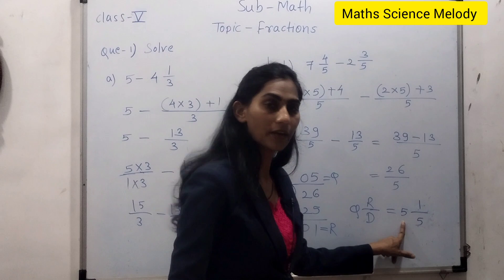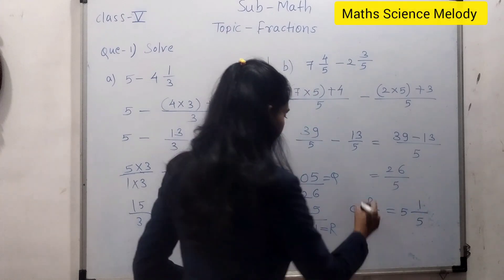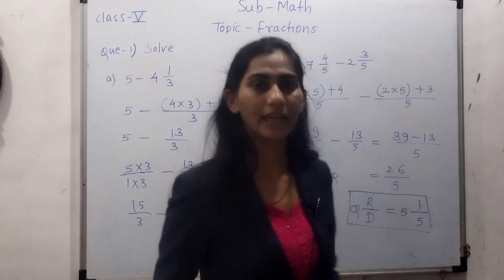5 times 5 is 25 plus 1 equals 26 upon 5. Okay, thank you.